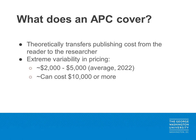So what does the cost of an APC cover? Theoretically, APCs transfer publishing costs from the reader or subscribing institution to the researcher. Those familiar with APCs will note that there is extreme variability in cost. Currently, most APCs range between two and five thousand US dollars per article. However, some APCs in highly prestigious journals can cost up to ten thousand dollars or more. Therefore, it's important to plan ahead.